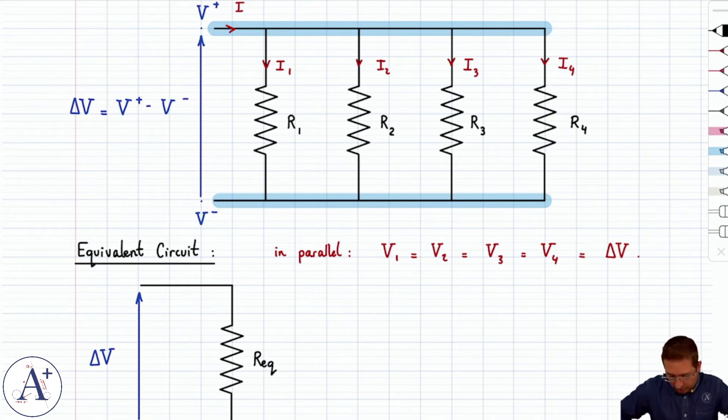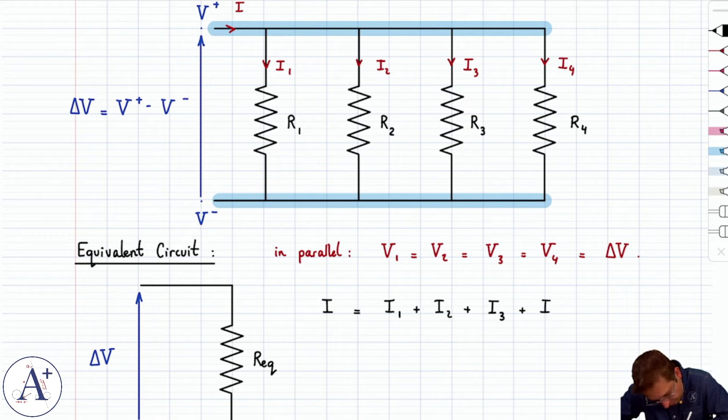So how will we do that? Well, let's write what's true about the current. We know for sure that I has to be the sum of I1 plus I2 plus I3 plus I4. That is where I1, I2, I3, I4 come from. They come from I.